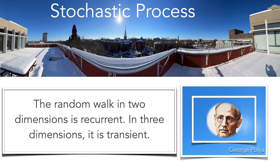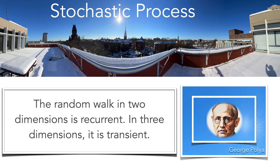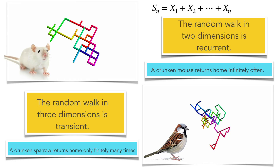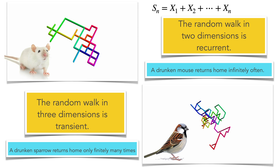A random walk is a stochastic process where one moves in any given direction with the same probabilities. We assume that each step is independent of each other — this is a Martingale. George Pólya showed that if you look at a random walk in two dimensions, a drunken mouse returns infinitely often to the origin. A random walk in two dimensions is recurrent, while in three dimensions the random walk is transient.